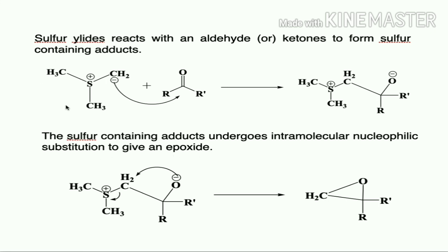The sulfur-containing adduct formed by addition of the sulfur ylide to the carbonyl group undergoes intramolecular nucleophilic substitution to give an epoxide. This is very similar to a phosphorus ylide reaction, except that instead of an alkene (as with phosphorus ylides), sulfur ylides give an epoxide.